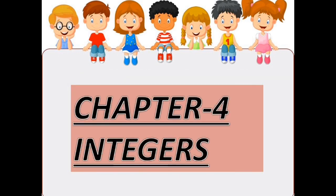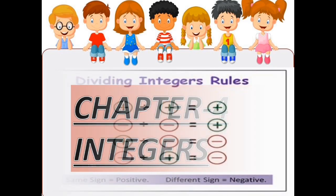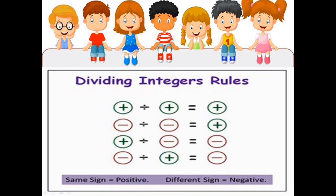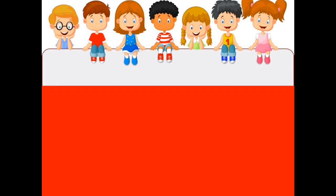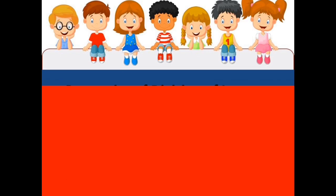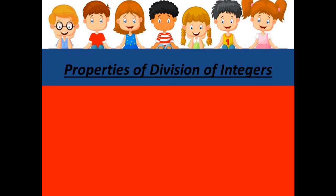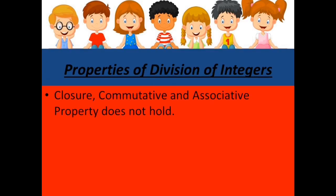We were doing our chapter number 4. And in the previous video, we learnt about the rules for division of integers and the properties of division of integers, in which we learnt that closure, commutative and associative property does not hold.